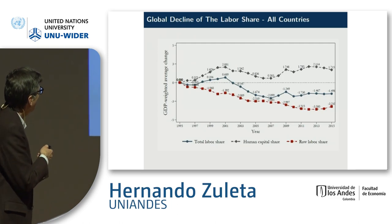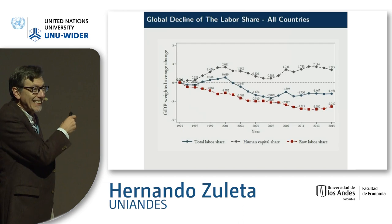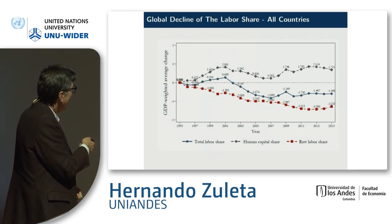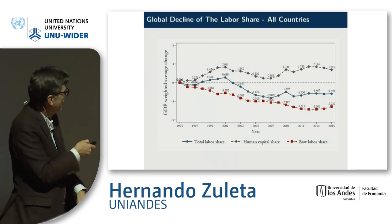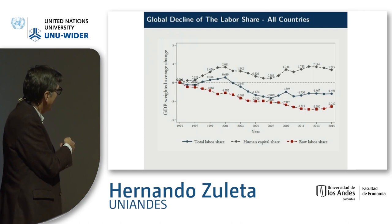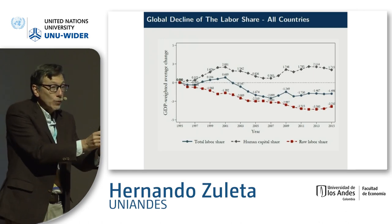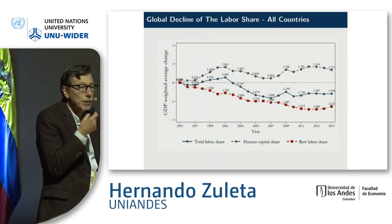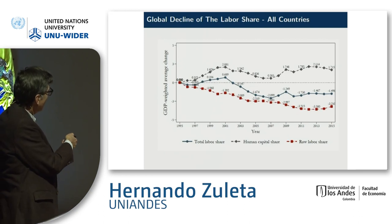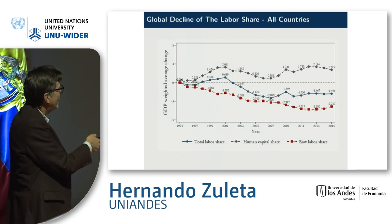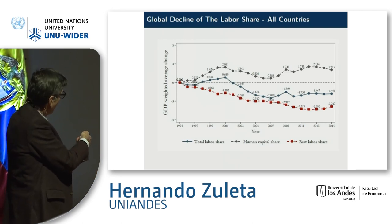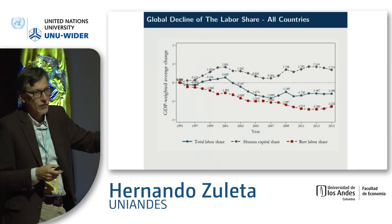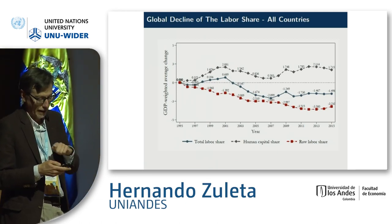This is the first result. Here we have total labor income, weighted by GDP. We have this decline in labor income from 1995 to 2015. However, once we split human capital and raw labor share, what we see is that the decrease in labor income is completely driven by raw labor. Indeed, human capital income share is going up — it doesn't have a clear trend, but we have an increase in human capital share. Extremely important message: the decrease in labor income share is driven by raw labor income.